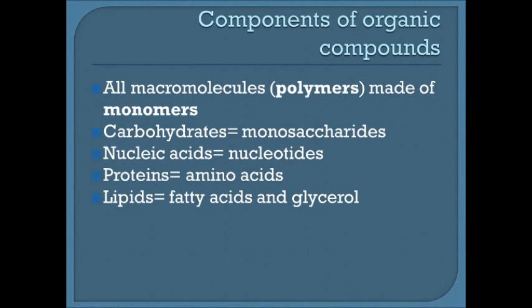Now we're going to switch gears into macromolecules. Macromolecules are known as polymers, meaning they're made up of smaller things called monomers, which are building blocks. Each macromolecule has its own specific monomer: carbohydrates are made of monosaccharides, nucleic acids of nucleotides, proteins of amino acids, and lipids of fatty acids and glycerol. Each also has its own specifically named bonds.